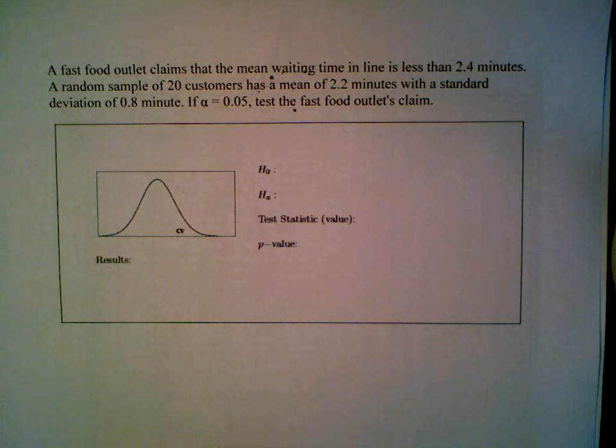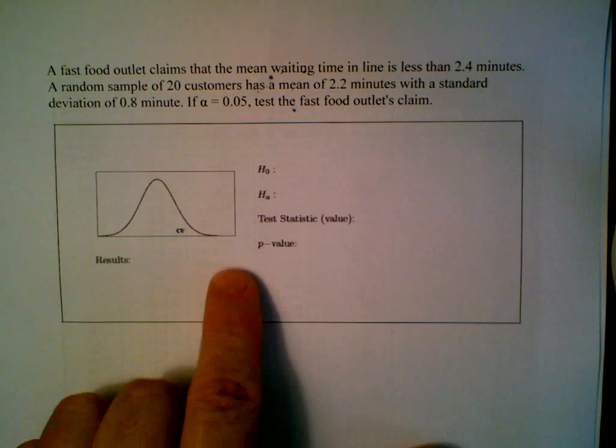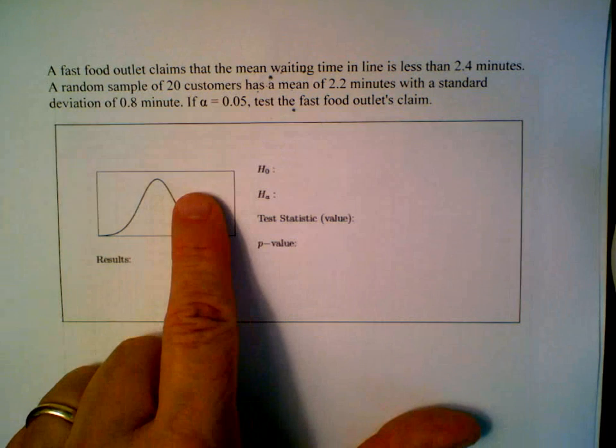Here's a one-sample t-test by hand and with the calculator. Now here's the problem. The problem says that a fast-food outlet claims that the mean waiting time in line is less than 2.4 minutes.